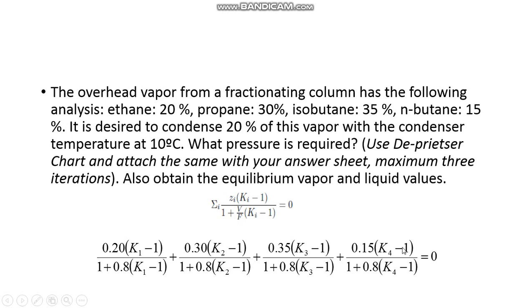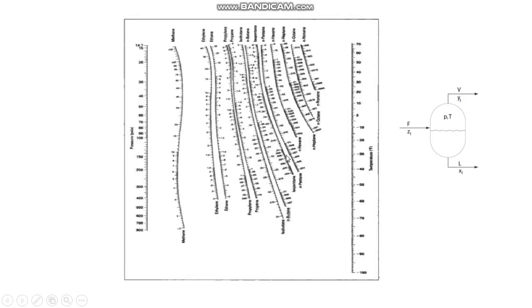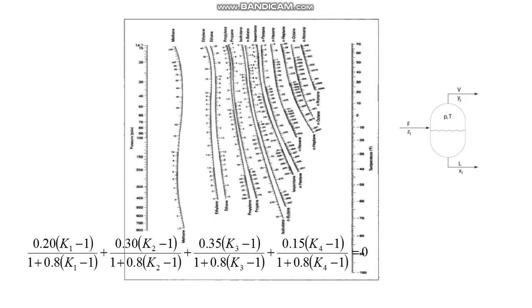Now, the question is, how do I get K? I already know the value of T, that is 10 degrees, and I need to find out pressure. So what I will do is, I will go to the De-Priester chart and I will just draw a line from 10 degrees to any random pressure. Now, this will give me the value of K for ethane, propane, isobutane, and n-butane. So I will get K1, K2, K3, K4. I will substitute that K1, K2, K3, K4 here and I will check if it is 0 or not.